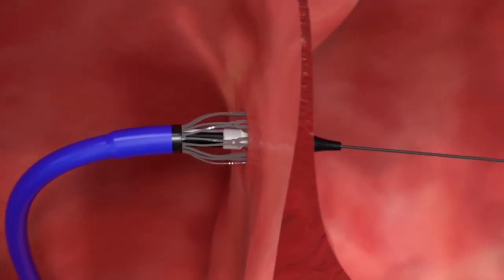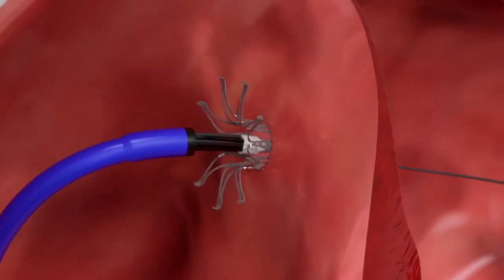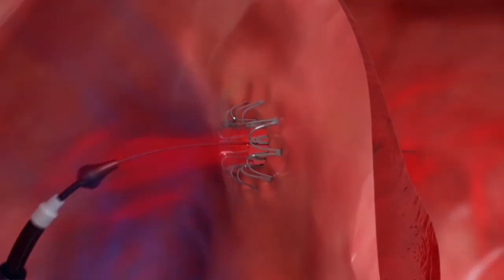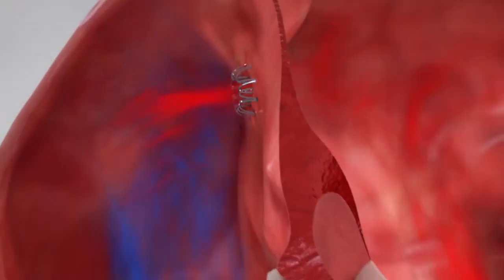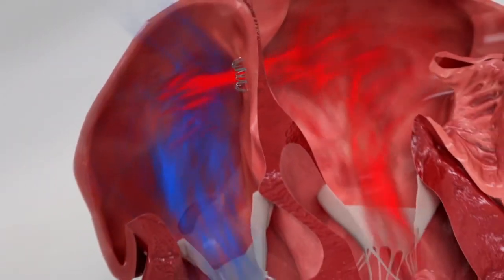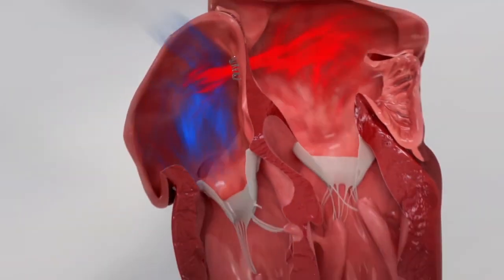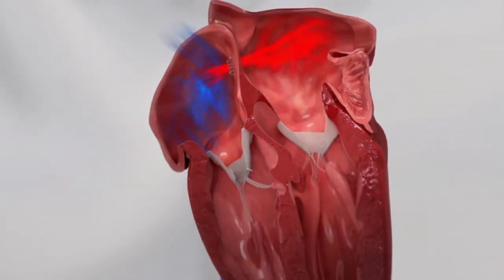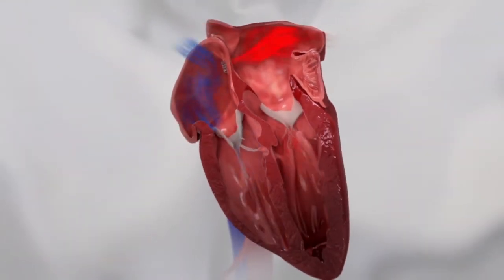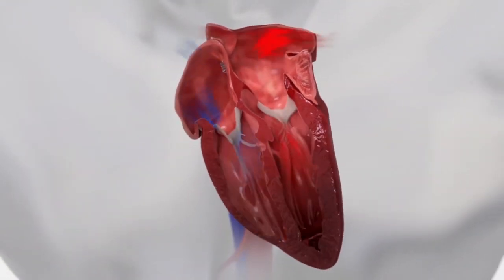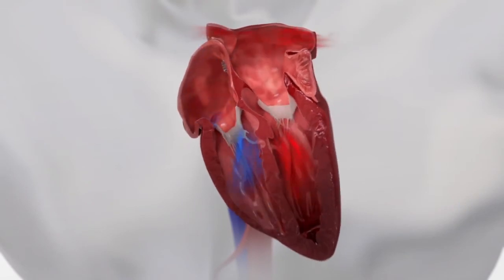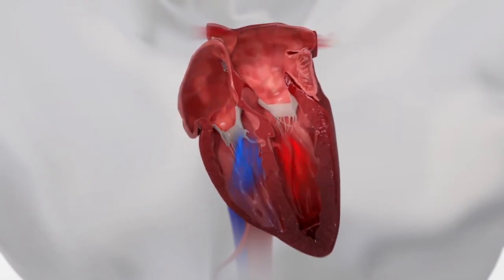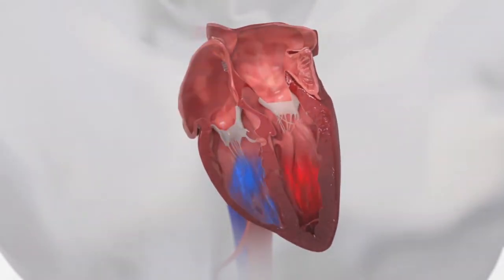The delivery system and guide wire are removed, while the implant remains securely in place. Blood now flows from the high pressure left side to the lower pressure right side, potentially lowering pressure in the left atrium, which may reduce the symptoms of heart failure.